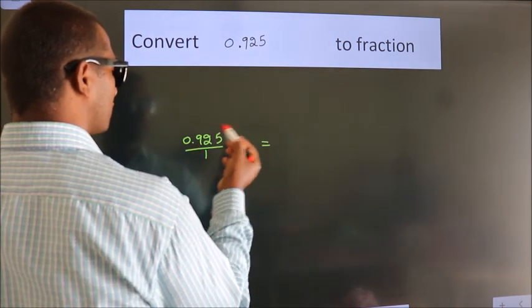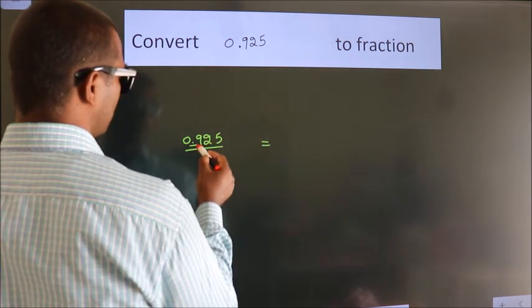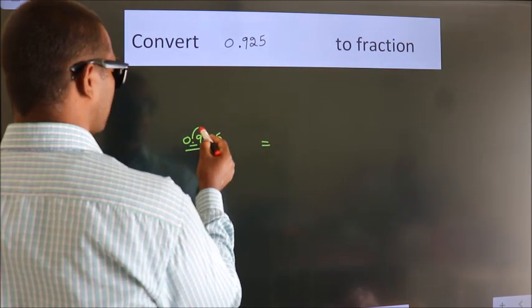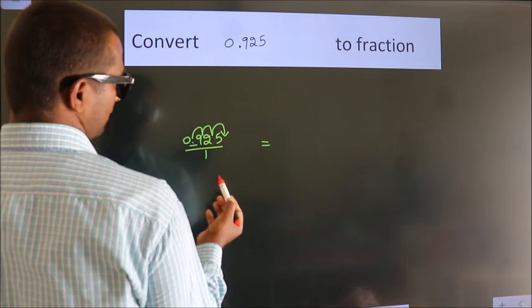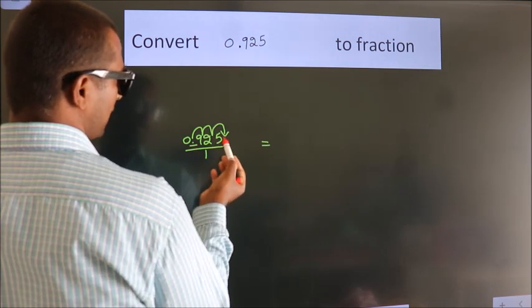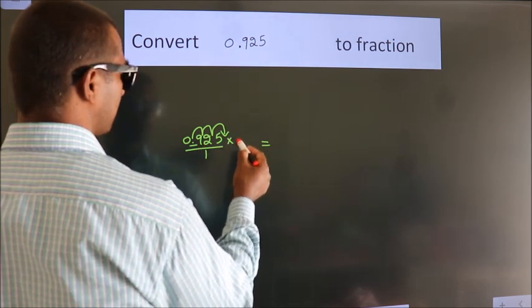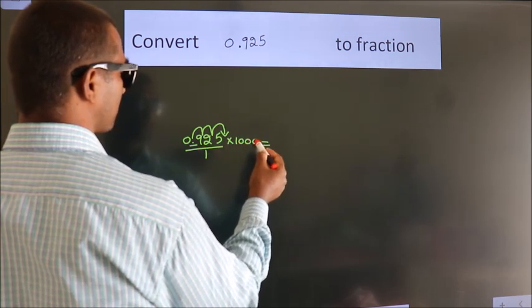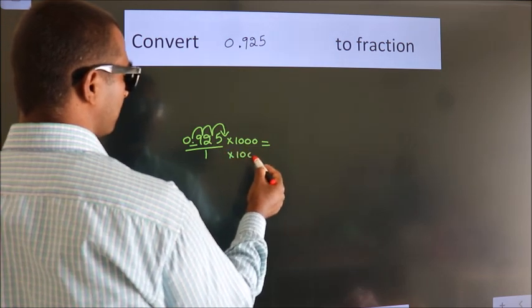To convert this to fraction, we have to move this decimal after 1, 2, 3 numbers. To move this decimal after 3 numbers, multiply it with 1000. Whatever you are multiplying in the numerator, in the denominator also do the same.